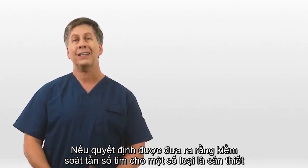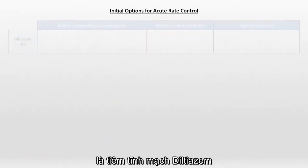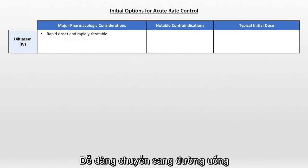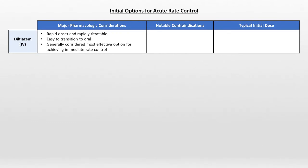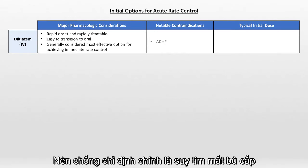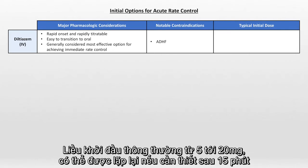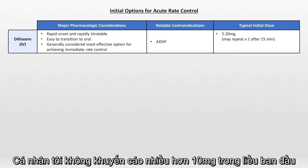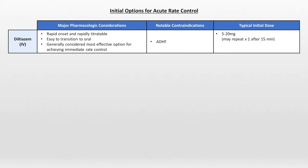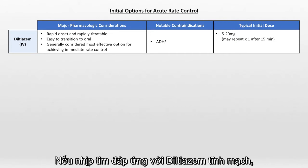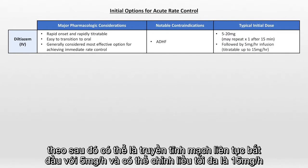If the decision is made that rate control is necessary, probably the most common initial option — at least in US emergency rooms — is IV diltiazem. It has a rapid onset, is rapidly titratable, easy to transition to an oral regimen, and is generally considered the most effective option for achieving immediate rate control. Since diltiazem is a negative inotrope, its major contraindication is acute decompensated heart failure. Typical initial doses range from 5 to 20 mg, repeatable after 15 minutes. I personally recommend no more than 10 mg for the initial dose. If the rate responds, it can be followed by a continuous infusion starting at 5 mg per hour, titratable to a max of 15 mg per hour.